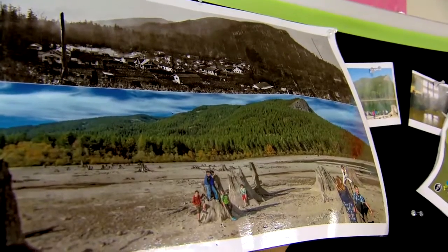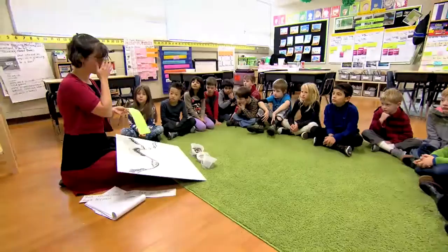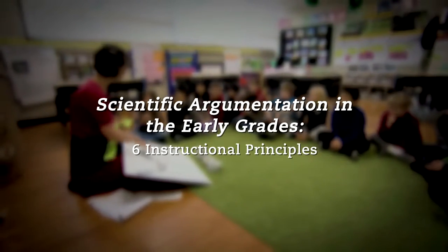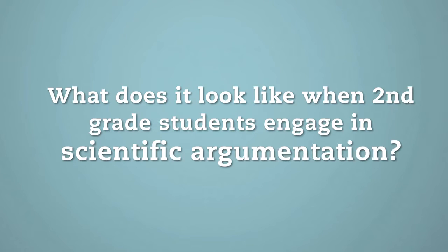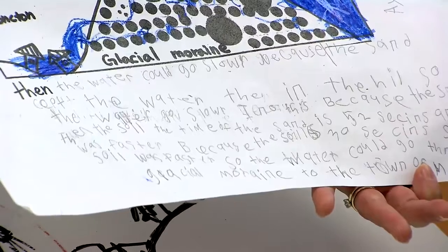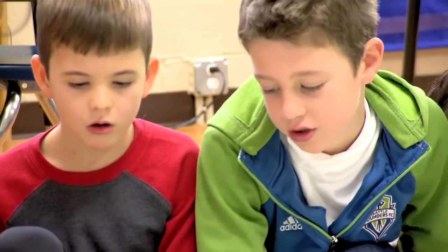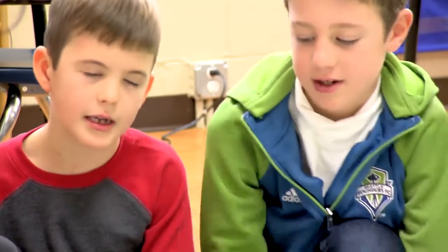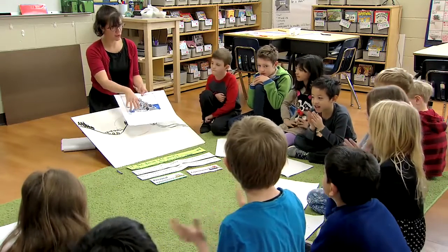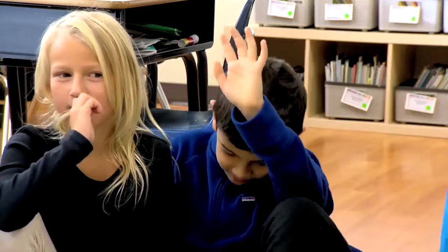We've been investigating the town of Mockton and wondering what caused it to flood. The soil was faster so the water could go through the glacier moraine to the town of Mockton. There's a claim and some evidence — can someone repeat what you heard? What was the general claim?